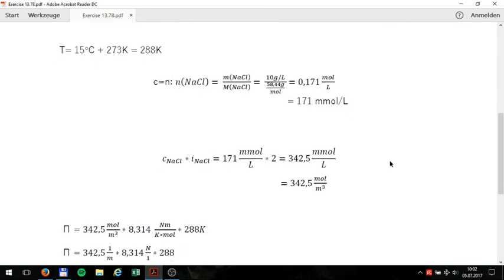So, in my next step, I calculate the exact concentration of NaCl. In this case, one multiplies the concentration C of NaCl with the van't Hoff factor i, which means that 171 millimole per liter is multiplied by 2 and this results in 342.5 millimole per liter. The unit millimole per liter can be transformed to mol per cubic meter and the result is therefore 342.5 mol per cubic meter.